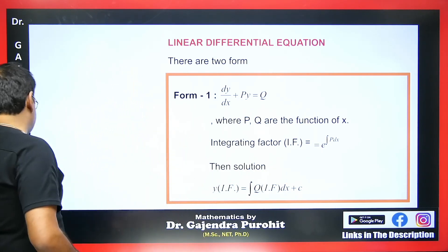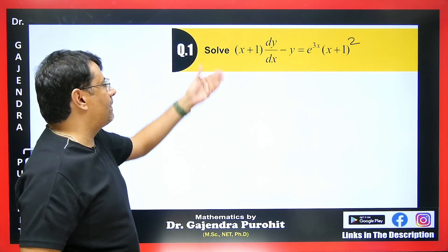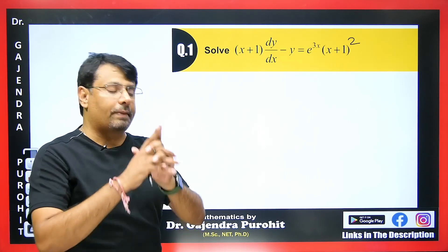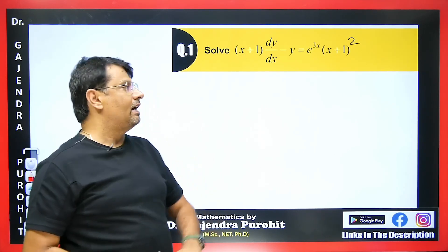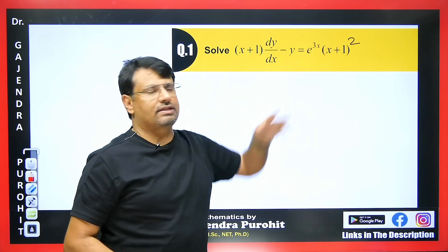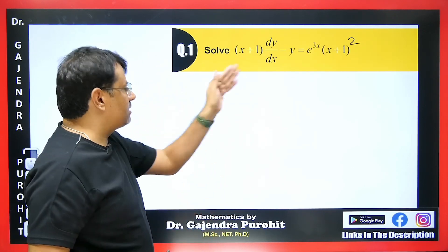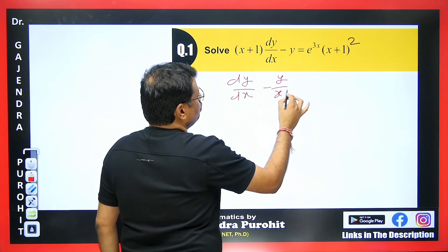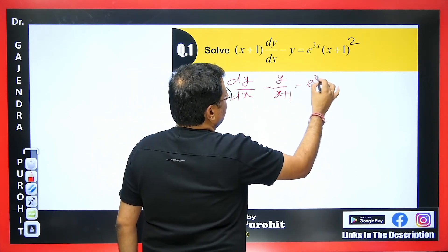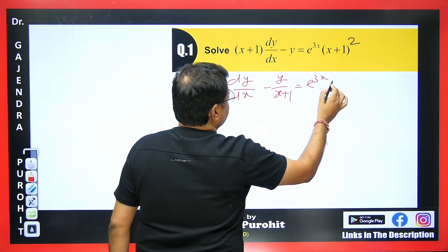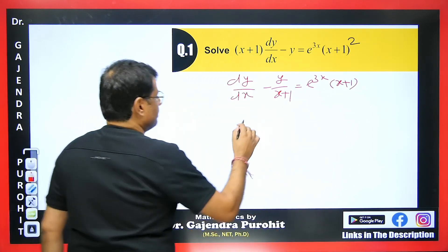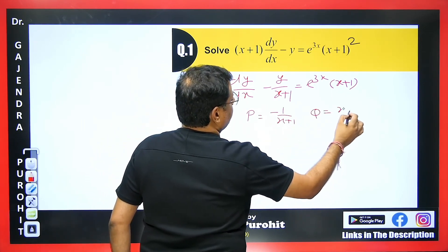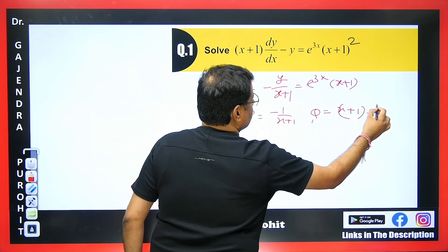Let's solve an example. We have a differential equation here. First, we make the coefficient of dy/dx equal to 1. Since y appears once and the rest is a function of x, this equation is clearly linear in y. Dividing by (x+1) we get dy/dx minus y/(x+1) = e^(3x)·(x+1). So the value of P is −1/(x+1) and the value of Q is (x+1)·e^(3x).